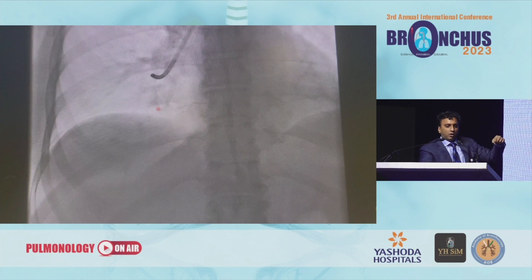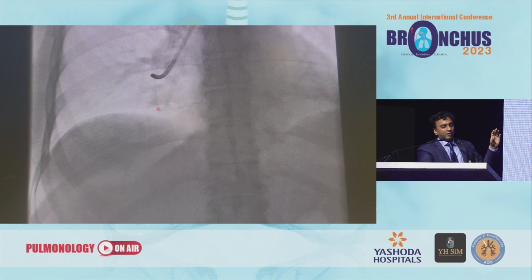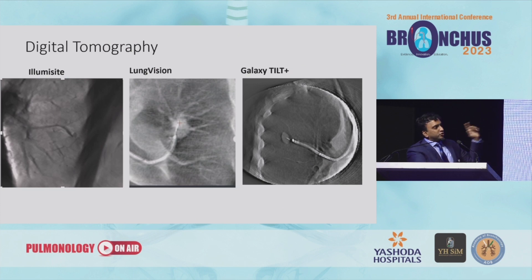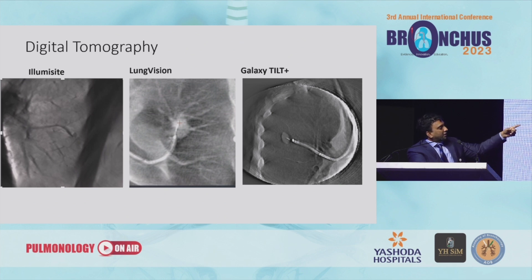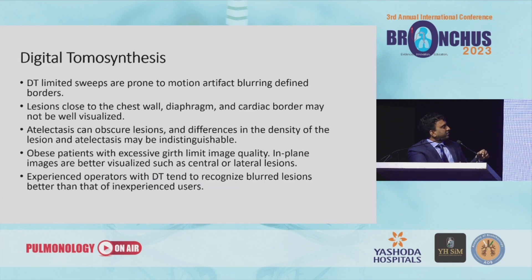Imaging matters more than which robot you use or which catheter system you use. No matter what you do in terms of your catheter system, you've got to have imaging as an integrated portion of successful peripheral navigation. Digital tomosynthesis images are really remarkable regardless of which vendor — LumisCite, LungVision, even Galaxy. Galaxy utilizes tool and lesion technology where you can put in whatever tool you want and actually see it. It's a robotic platform, whereas the others can utilize different modalities with prefix catheters.